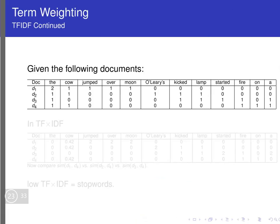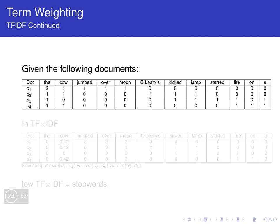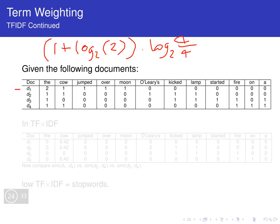Let's look at an example using the same four documents and their term-document matrix. Let's compute the TF-IDF value for the word 'the.' It appears in some documents more than others, but it appears in all documents. So the TF-IDF is: (1 + log₂(2)) × log₂(4/4). Four divided by four is one, and log₂(1) is zero — so the TF-IDF for 'the' is zero, meaning 'the' has zero importance. It is not an important word.